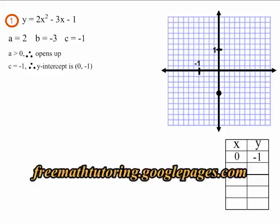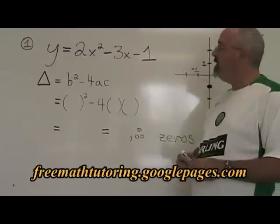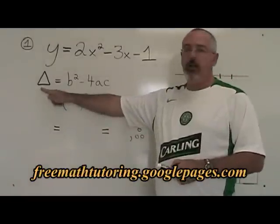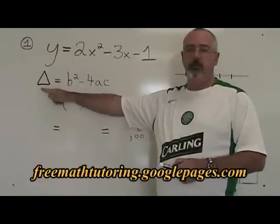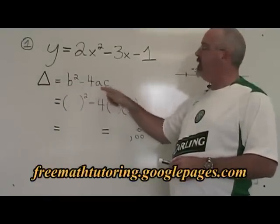This is what example one looks like before we find the discriminant delta. Delta, also known as the discriminant, is symbolized with the Greek letter delta, which is this triangle. The formula for delta is b squared minus 4ac.